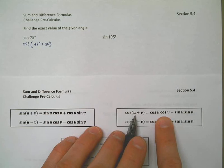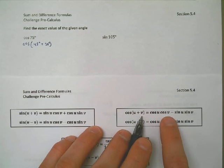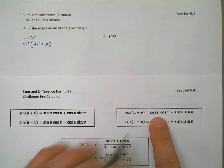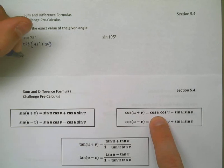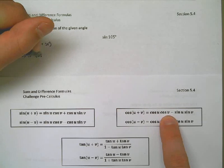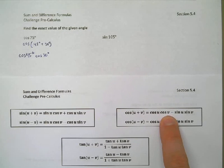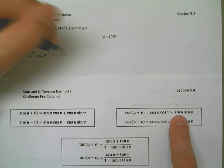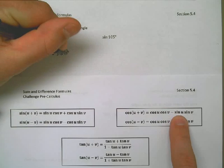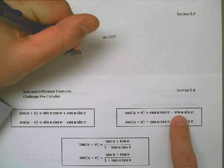It looks like u is going to be 45, the way I have it set up, and v is going to be 30. And so, I'm going to write then, it must be the cosine of 45 degrees times the cosine of 30 degrees minus, opposite sine, minus the sine of 45 degrees times the sine of 30 degrees.